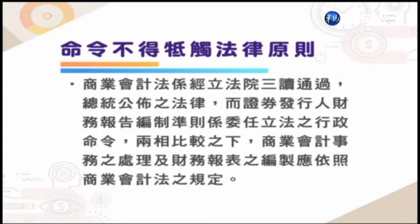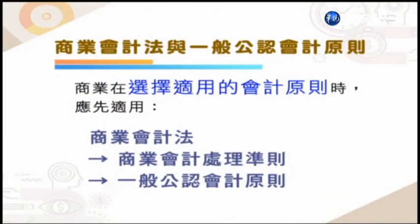因此，证券交易法它所授权制定的各个准则如果跟商业会计法、商业会计处理准则跟商业会计法抵触的时候当然也是无效的。商业会计法是经立法院三读通过、总统令公布的法律，而证券发行人财会报告准则则是委任立法的行政命令，两相比较之下，商业会计事务的处理以及财务报表的编制依照商业会计法的规定。那么商业在选择它适用会计原则的时候，通常就是依序：商业会计法、商业会计处理准则，然后才是一般公认会计原则。